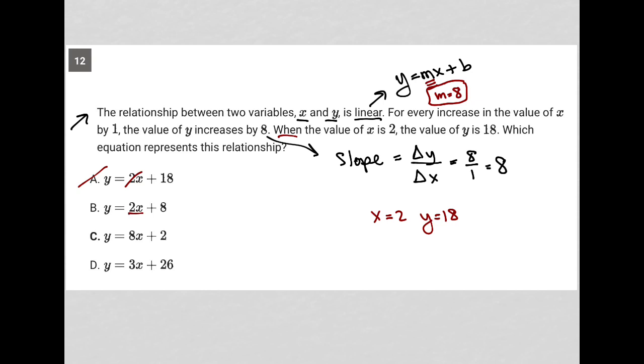Choice C has the 8 that we want, so that is good. And choice D has a 3 for the m value, so D is gone. Therefore, choice C must be the correct answer.